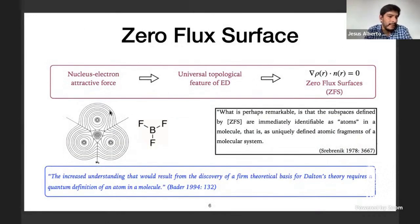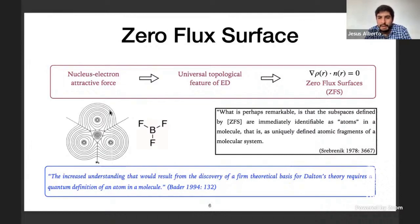The dominant morphology is due to the attractive force between nuclei and electrons and reveals a universal topological feature of electron density — that is, the presence of zero-flux surfaces in the gradient vector field of electron density. These surfaces bound certain regions within molecules which have been identified as the atoms in molecules. What is perhaps remarkable is that the subspaces defined by zero-flux surfaces are immediately identifiable as atoms in a molecule — that is, as uniquely defined atomic fragments of a molecular system. In this way, the zero-flux surfaces define atoms in molecules, and with this a quantum definition of an atom in a molecule can be established.